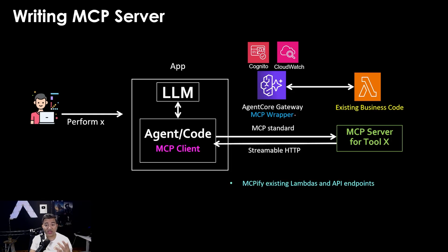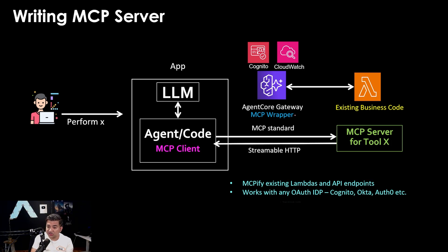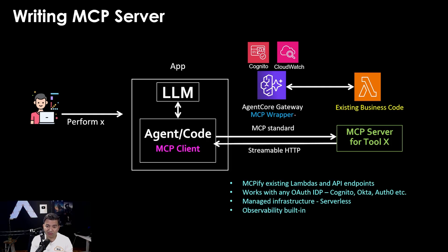Diving a bit deeper: Agent Core Gateway MCPfies existing Lambdas or API endpoints, and it works with any OAuth identity provider — Cognito, Okta, Auth0, etc. It runs on serverless, so AWS manages the infrastructure, scales up and down automatically, patches vulnerabilities, and you use it on a pay-as-you-go model. Observability is built in. I made a separate detailed video on Agent Core itself, with code samples — I'll give the link up top if you want to dive deeper.